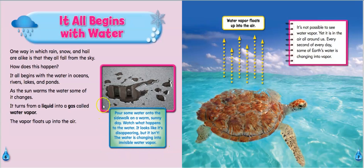And this tells about an experiment you can try. Pour some water onto the sidewalk on a warm, sunny day. Watch what happens to the water. It looks like it's disappearing, but it isn't. The water is changing into invisible water vapor.